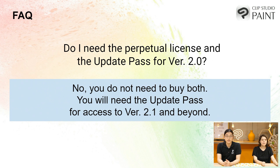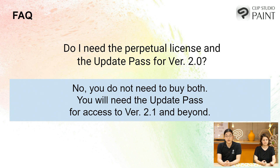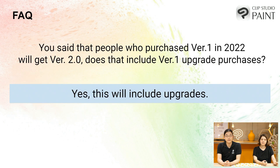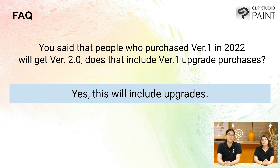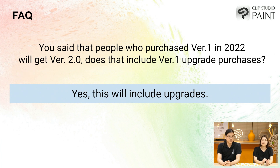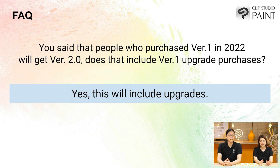Do you need both the perpetual license and update pass for version 2.0? No, you do not need to buy both. You will need the update pass for access to version 2.1 and beyond. For people who purchased version 1 in 2022 and will get version 2.0 — does that include version 1 upgrade purchases? Yes, this will include upgrades. So a common situation would be if you were on Pro and then upgraded to EX — if you did it this year you would be included.